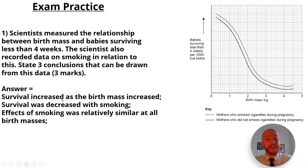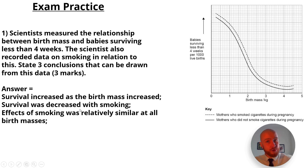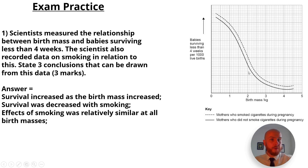For the first mark: survival increased as birth mass increased — babies surviving less than four weeks was really high at low birth weight, but around three to four kilos there was a greater survival chance, peaking at around four kilos. Second mark: survival was decreased with smoking — the dotted line represents mothers who smoked during pregnancy, and throughout, those mothers had lower survival rates than the solid line of non-smokers. Third mark: the effect of smoking was relatively similar at all birth masses, as the solid line doesn't cross the dotted line at any point.